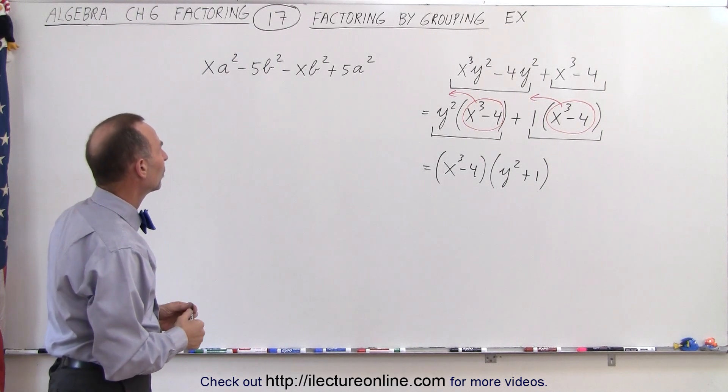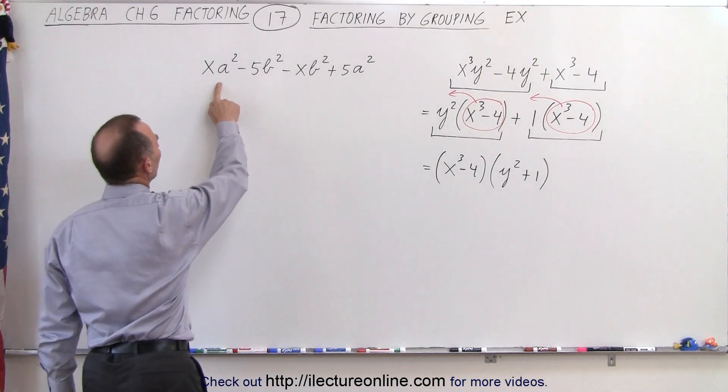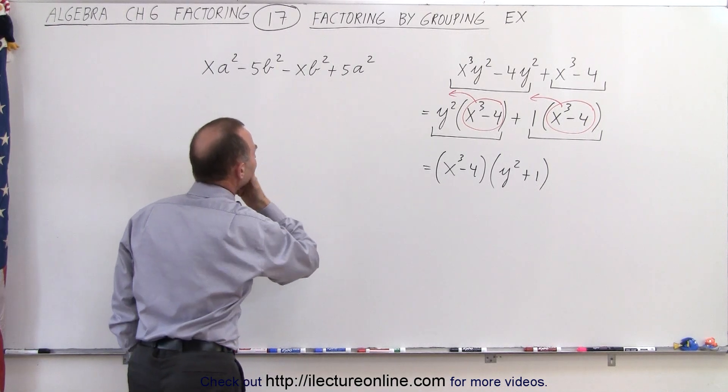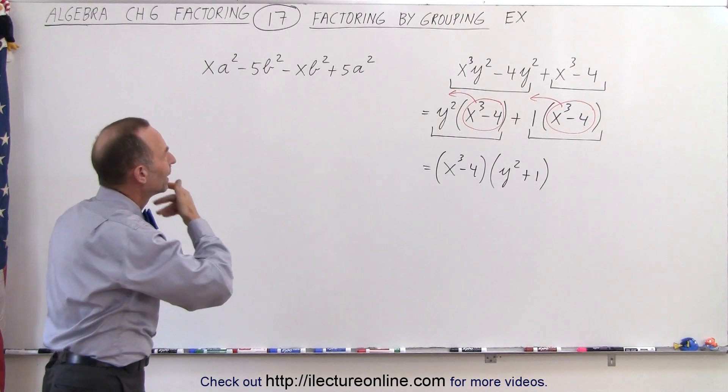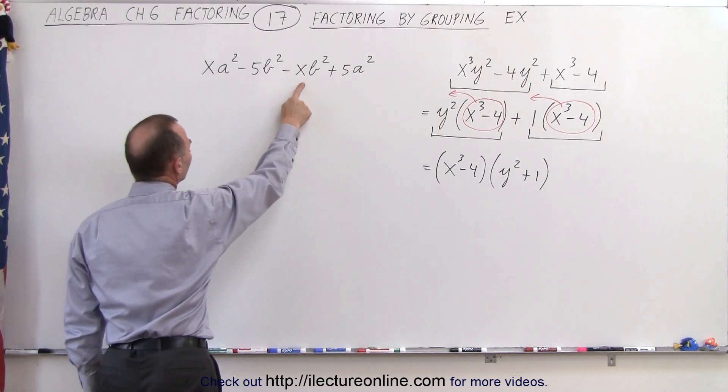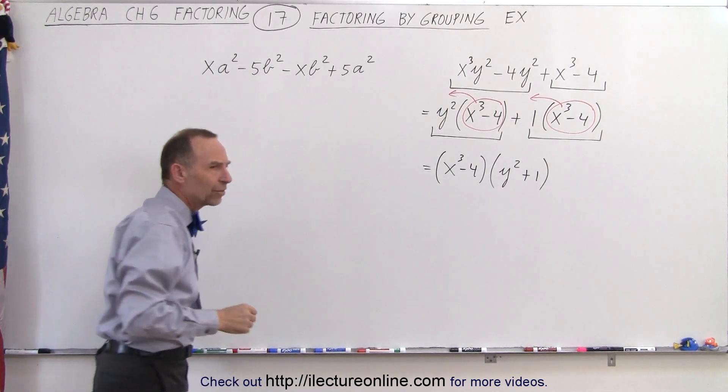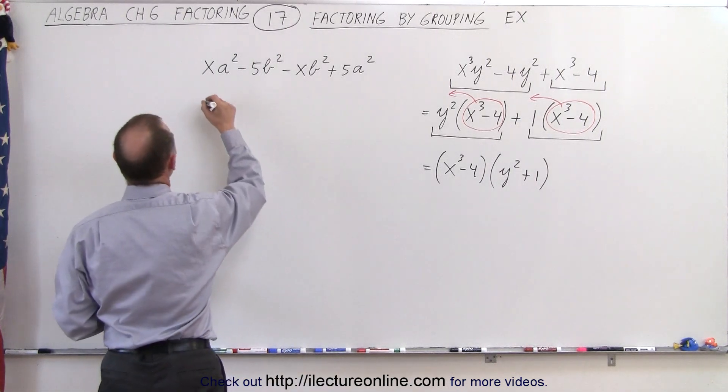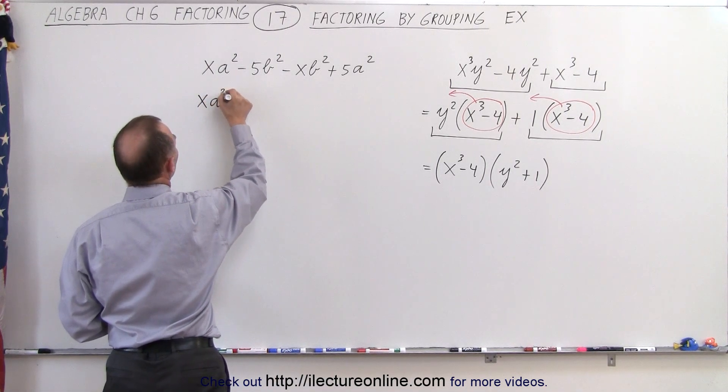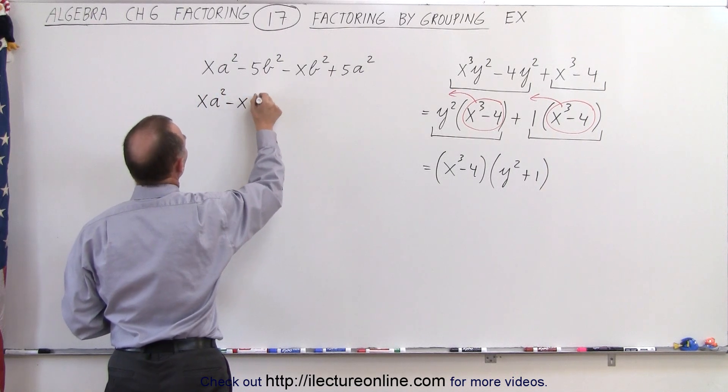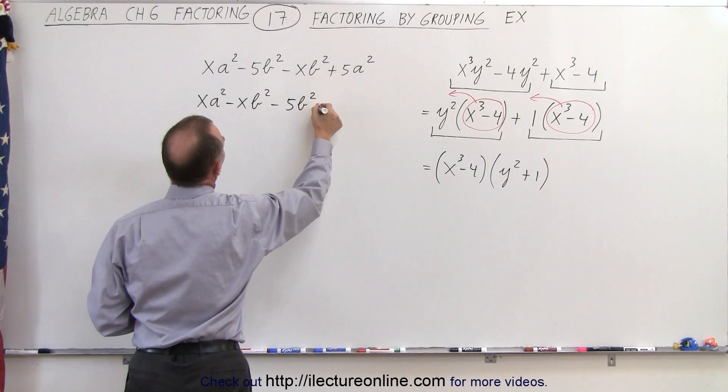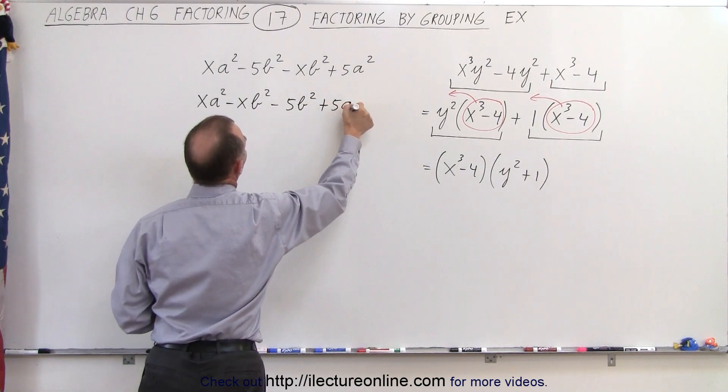Let's take a look at the second one. So here we have x a-square minus five b-square minus x b-square plus five a-square. The first and the third term contain an x, so maybe I want to group those two together. So we end up with x a-square minus x b-square minus five b-square and plus five a-square.